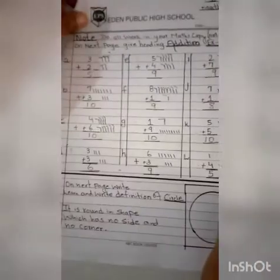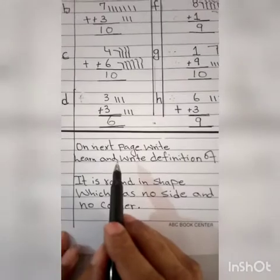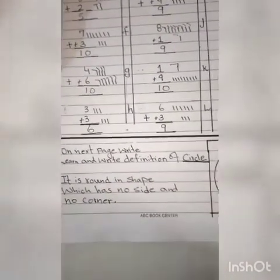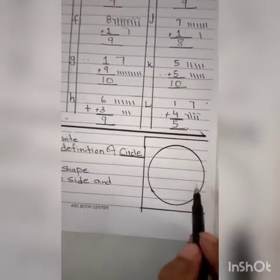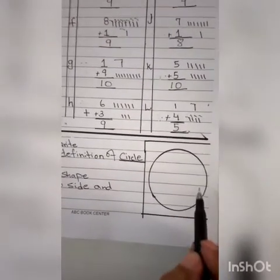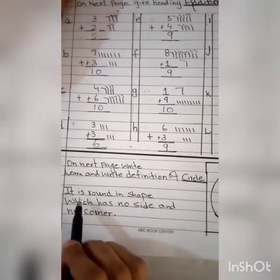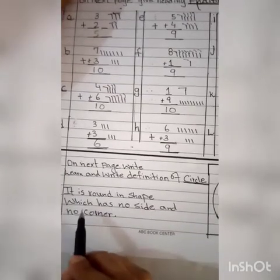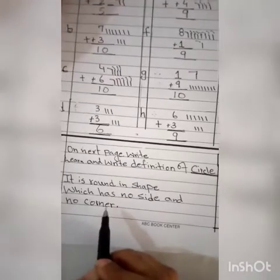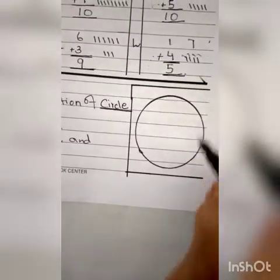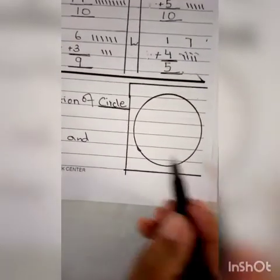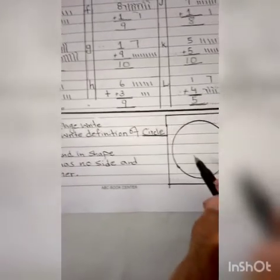Okay dear student, ab aap next page lijiye. Ab aapko mein karvaaungi definition of circle. Class K.G. tak toh aapne directly sirf shapes padhayi na — unke naam likhe, unme coloring ki. Lekin chunke ab aap class 1 ke student hain, toh aap poori circle ki definition pahle teacher se samjhe, pher usko copy down karo. Now — it is round in shape which has no side and no corner. Yarni circle joh hai woh round shape mein hai. Iska koi side nahi hai aur iska koi corner nahi hai — a very simple definition of circle. Aapne isko copy down karna hai, iski picture draw kijiyega aur achchi si coloring bhi kijiyega.